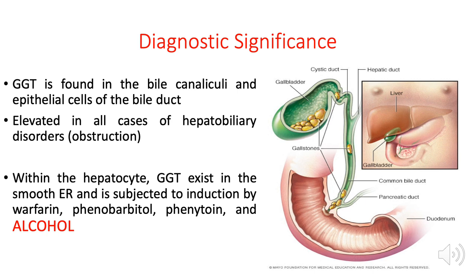One disease associated with high serum GGT is bile duct obstruction, which can be caused by gallstones or parasites. The mechanism is that the gallstone or parasite induces the epithelial cells of the bile duct to increase production of gamma glutamyl transferase. The reason for this increased production is still unknown today, but the result is that some of these enzymes gain entrance into the blood. Therefore, patients with bile duct obstruction will have elevated serum GGT.